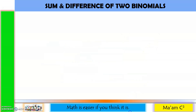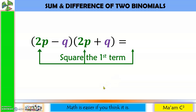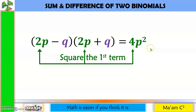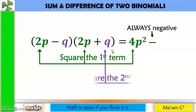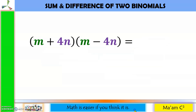Let's have another one: the quantity 2p minus q times 2p plus q. Again, let us square the first term. The square of 2 is 4, and the square of p is p squared, so we have 4p squared. And then this is always negative. Square the second term — the square of q is q squared.